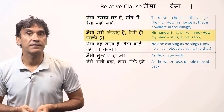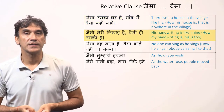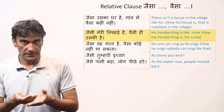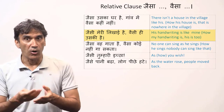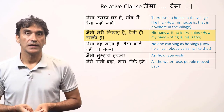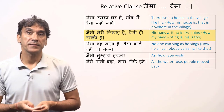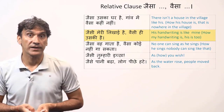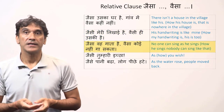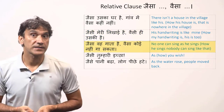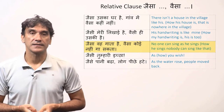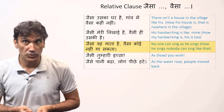Jaisi meri likhai hai, vaisi hi uski hai — his handwriting is like mine. Jaisi is feminine here because the noun 'handwriting' (likhai) is feminine. Another example: 'Jaisa wo gaata hai, vaisa koi nahi ga sakta' — no one can sing as he sings.